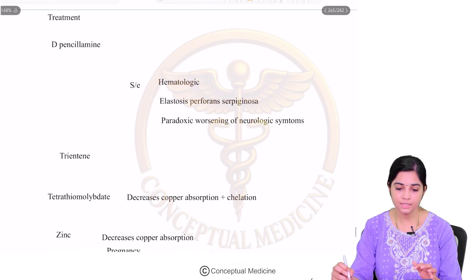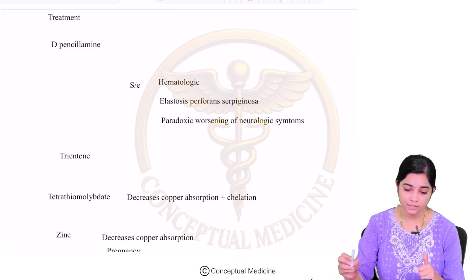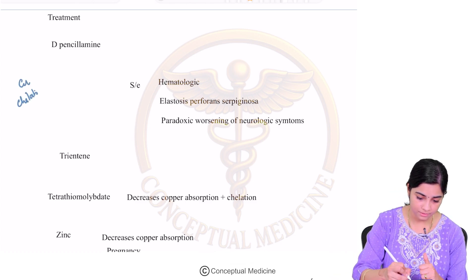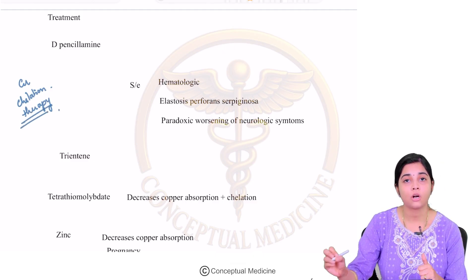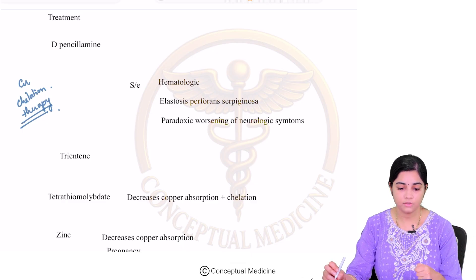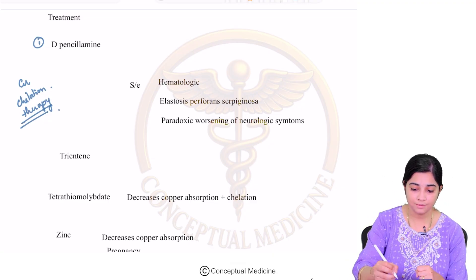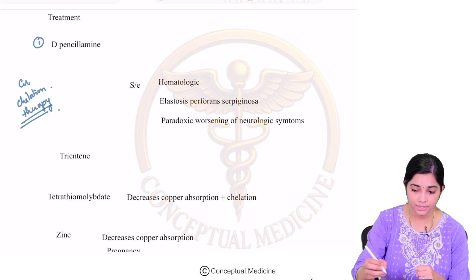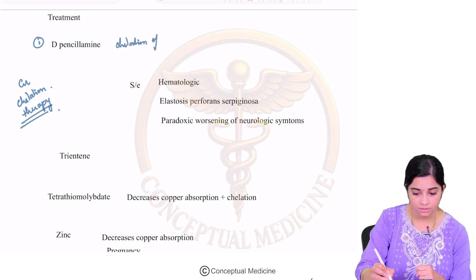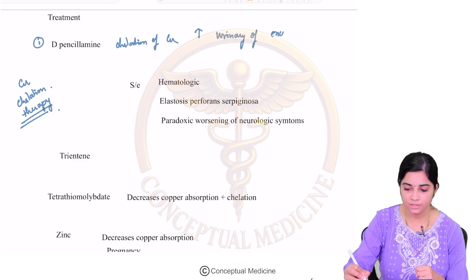Now let us understand the treatment of Wilson's disease. There are two ways in which you can treat. One is the use of copper chelation therapy — to absorb the excess of unbound copper. The first drug used is D-penicillamine. D-penicillamine basically binds to copper, helps in the chelation of copper, and also increases the urinary excretion of copper.